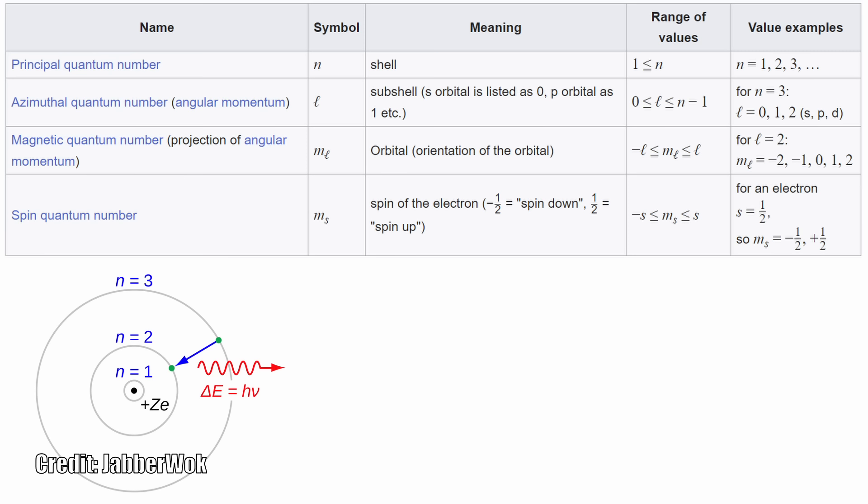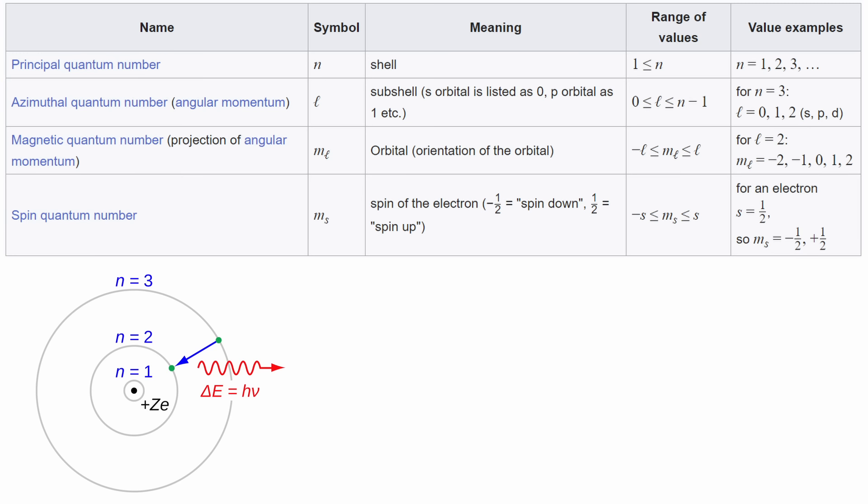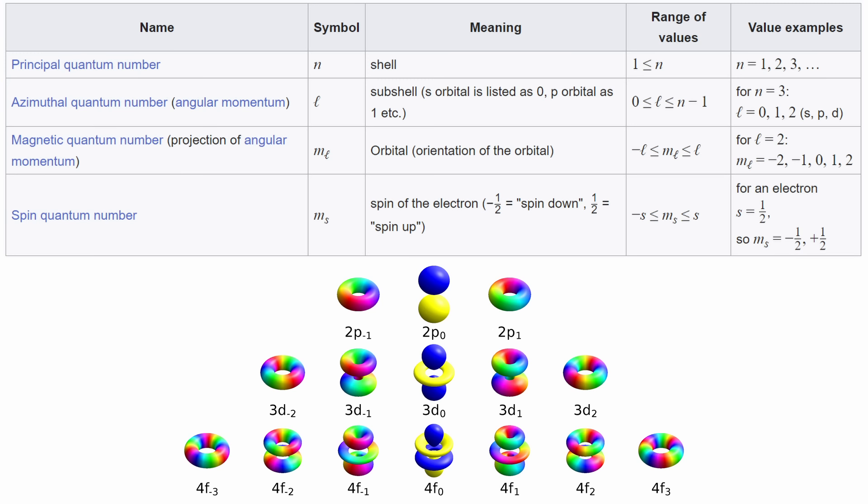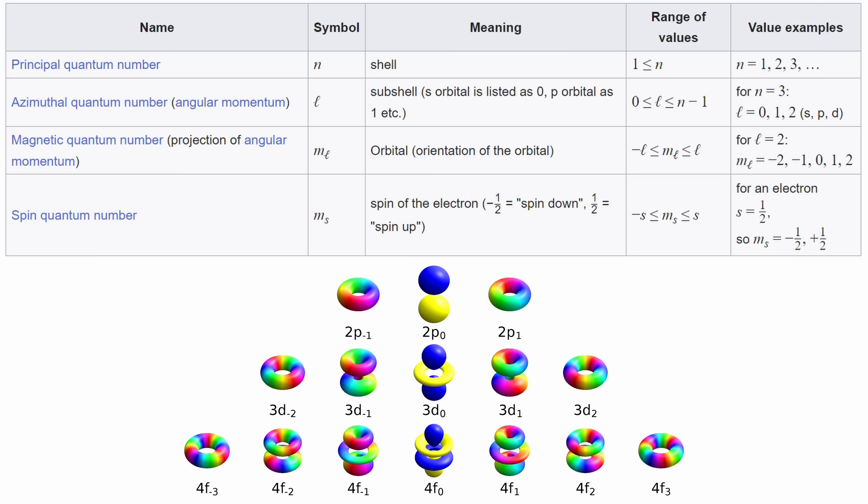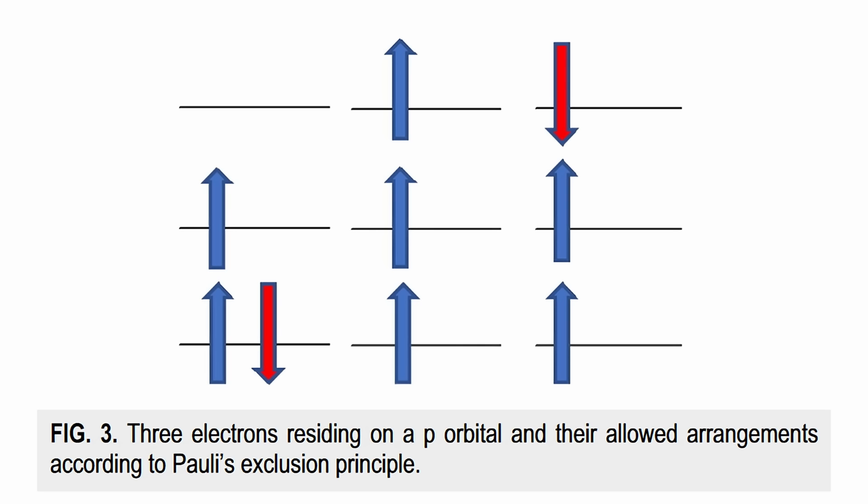Electronic states within atoms are comprehensively defined by four quantum numbers: the principal quantum number, which determines the energy level of a specific electron shell or orbit; the orbital angular momentum quantum number, describing the subshell and quantifying an electron's total angular momentum due to its orbital motion; the magnetic quantum number, governing the component of the orbital angular momentum along a particular direction, typically in the context of an applied magnetic field; and the spin quantum number, which relates to an electron's inherent spin property.